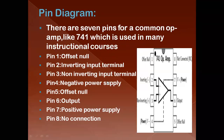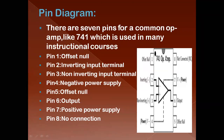Coming to the pin diagram of an op-amp — normally there are seven pins for a common op-amp like the 741, which is used in many applications. The 741 op-amp has eight pins: pin 1 is offset null, pin 2 is inverting input, pin 3 is non-inverting input, pin 4 is negative power supply (V−), pin 5 is offset null, pin 6 is output, pin 7 is positive power supply, and pin 8 is NC (no connection).